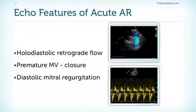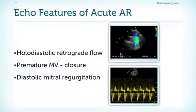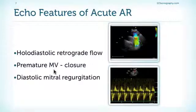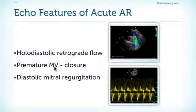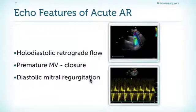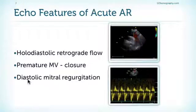Other findings we encounter include premature mitral valve closure, which is caused by the fact that the end-diastolic pressure in the left ventricle is higher than the pressure in the left atrium, and thereby the mitral valve closes prematurely in diastole. In addition, pressure can be elevated in such a way that we even have diastolic mitral regurgitation.